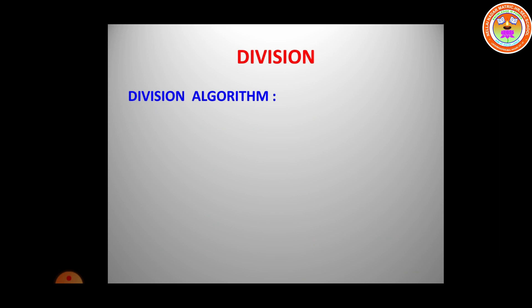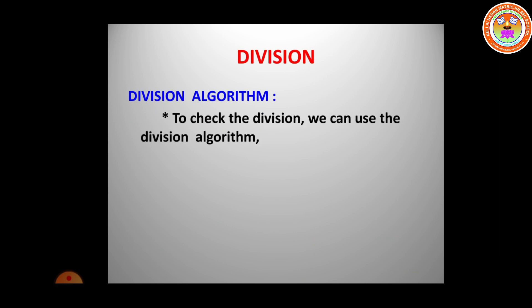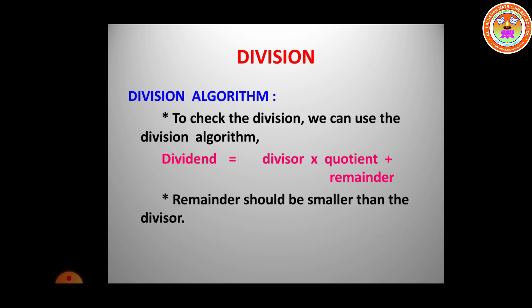Let us move to division. We recall the division algorithm: to check if a division is correct, we use the formula — Dividend equals Divisor multiplied by Quotient plus Remainder. The remainder should always be smaller than the divisor.